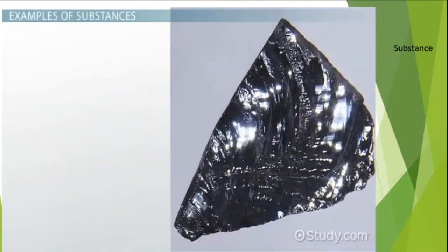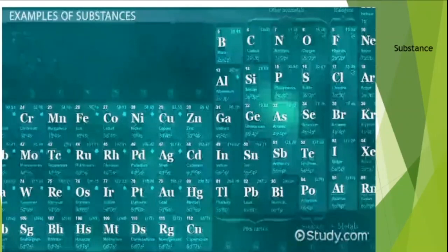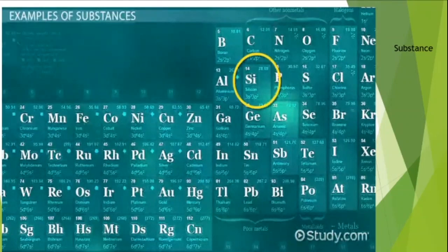A sample of silicon consists of only one type of atom — silicon atoms — so silicon is a pure substance. Since silicon atoms are in their simplest form and cannot be broken down any further, silicon is also an element. An easy way to figure out whether something is an element is to look up the substance on the periodic table.